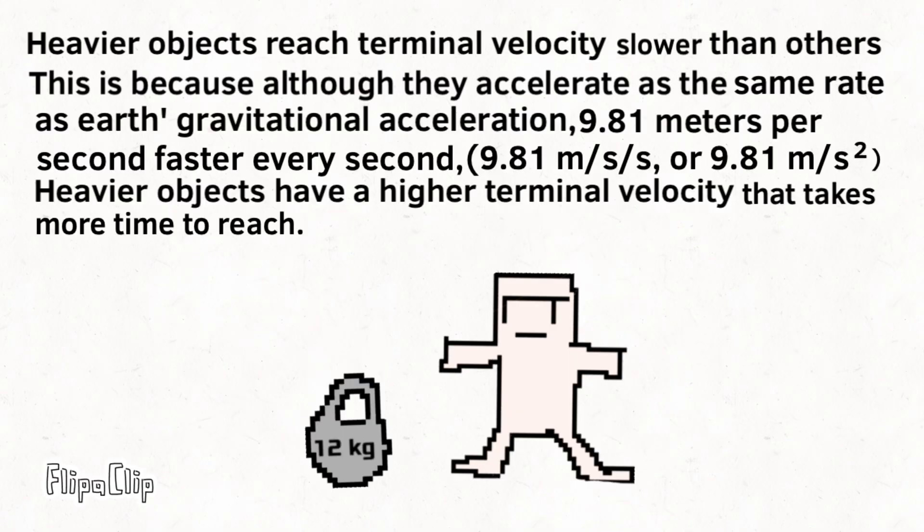Heavier objects reach terminal velocity slower than others. This is because, although they accelerate at the same rate as Earth's gravitational acceleration, 9.81 meters per second faster every second,